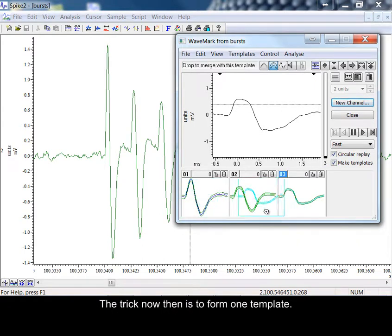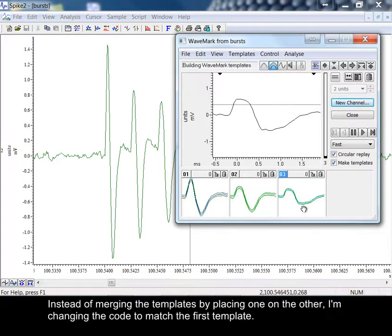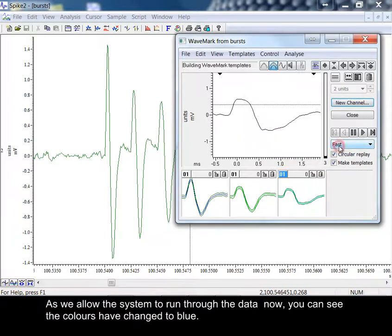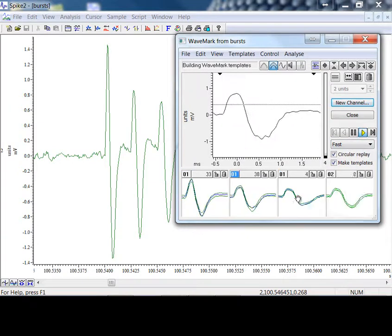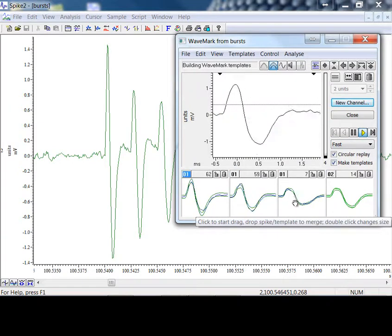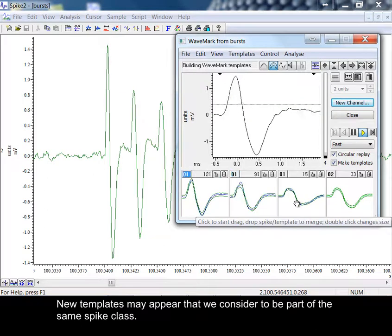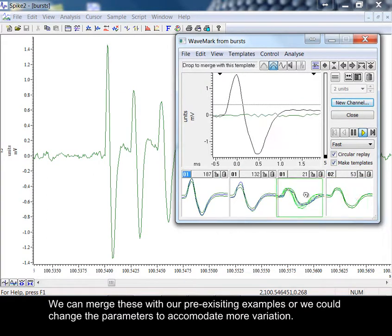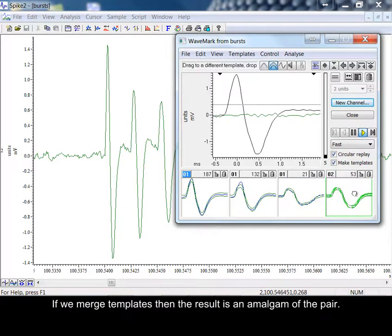The trick now then is to form one template. Instead of merging the templates by placing one on the other, I'm changing the code to match the first template. As we allow the system to run through the data now, you can see the colors have changed to blue. New templates may appear that we consider to be part of the same spike class. We can merge these with our pre-existing examples or we could change the parameters to accommodate more variation.